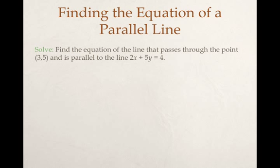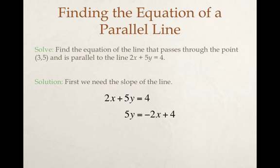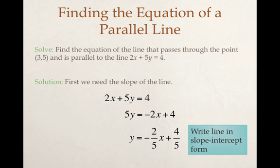Can anybody look at 2x plus 5y equals 4 and automatically, without blinking, say aha, the slope is blank? Probably not. And so the first thing we need to do is find the slope of the line. So given my line in general form, what I'm going to do is I'm going to subtract 2x from both sides and then divide every term by 5 to get my line in slope-intercept form.